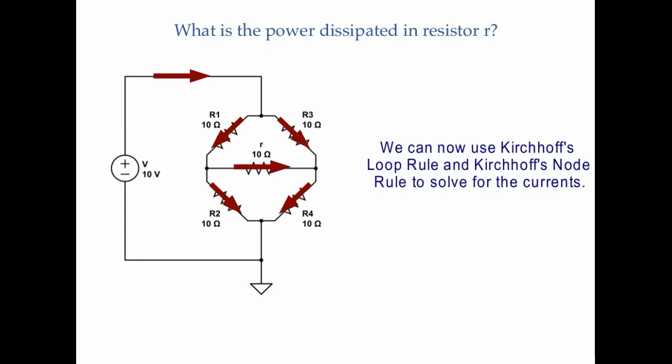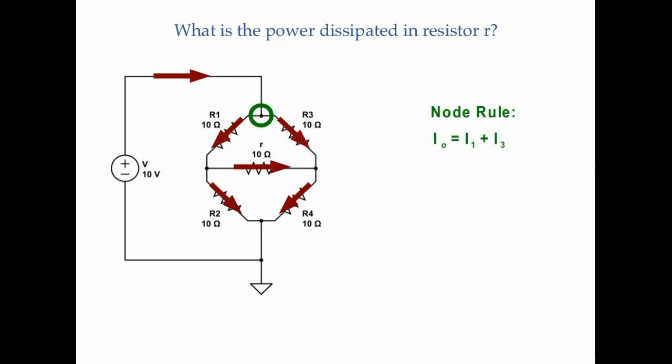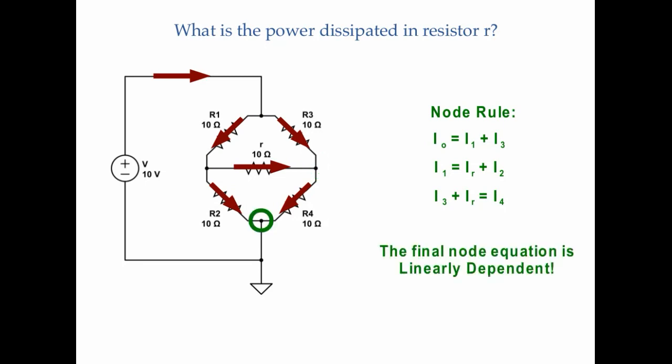Now we can use Kirchhoff's loop rule and node rule to solve for the currents. Starting with the node rule: at the top node, I have I0 going in and I1 and I3 going out. At the second node, I have I1 going in and IR and I2 going out. At the third node, I3 and IR are going in and I4 is going out. A fourth node equation exists but is linearly dependent — it can be derived from the first three and gives no additional information.